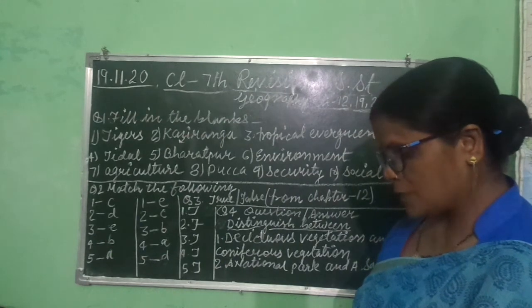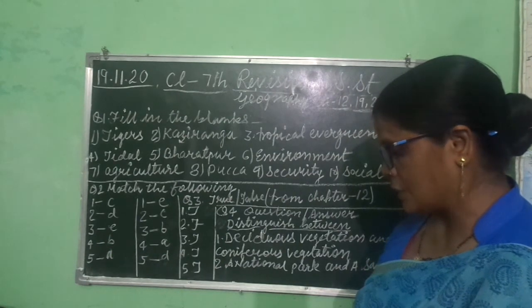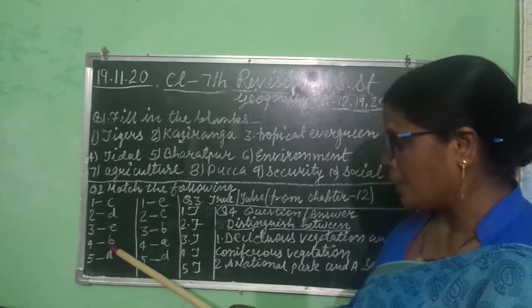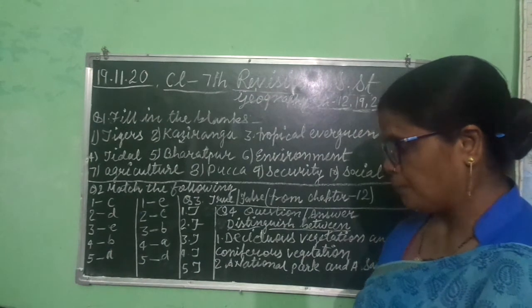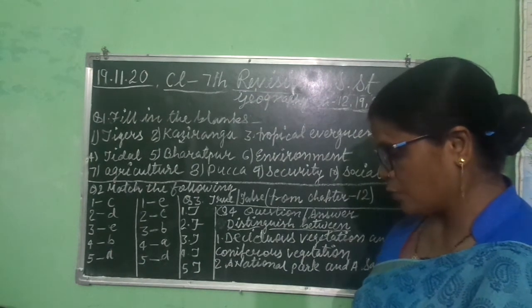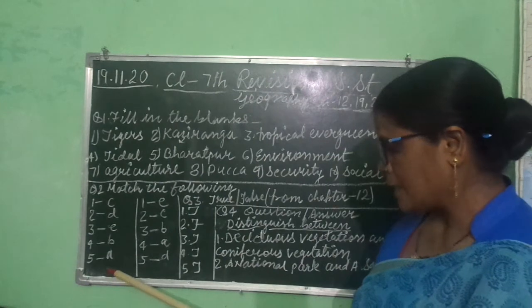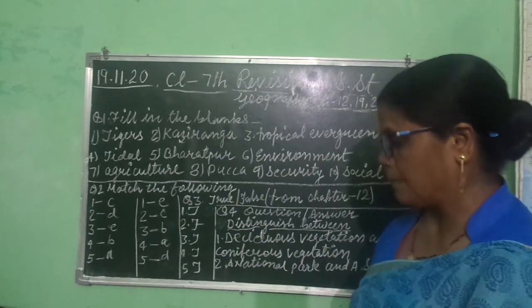Fourth, semi-desert and desert vegetation matches with B, that is babool. Fifth, tidal forest matches with A, that is kashrina. Okay?